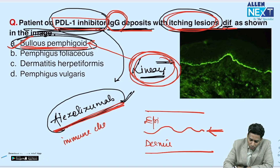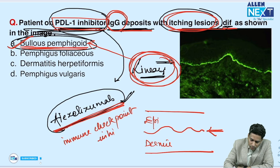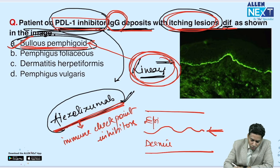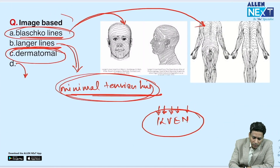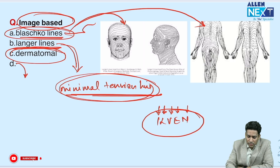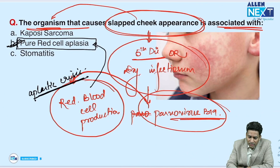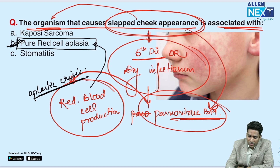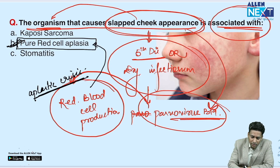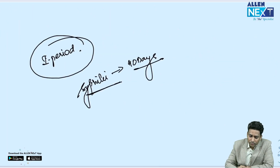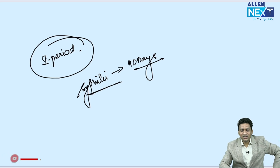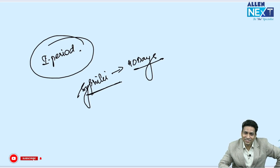PD-L1 inhibitors are immune checkpoint inhibitors. Image-based question on Blaschko lines was covered, and Parvovirus B19 — the organism causing slap cheek appearance — is associated with pure red cell aplasia. Thank you very much, that is all from my side.